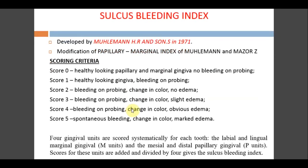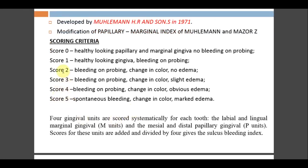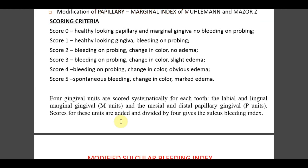The Sulcus Bleeding Index was developed by Mühlemann, Edgar, and Saxer in 1971, as a modification of the Papillary Marginal Index. Scoring: 0 = healthy-looking papillary and marginal gingiva, no bleeding on probing; 1 = healthy-looking gingiva, bleeding on probing; 2 = bleeding on probing with color change but no edema; 3 = slight edema; 4 = same symptoms with obvious edema; 5 = marked edema. Four gingival units per tooth are scored; scores are added and divided by four to give the Sulcus Bleeding Index.